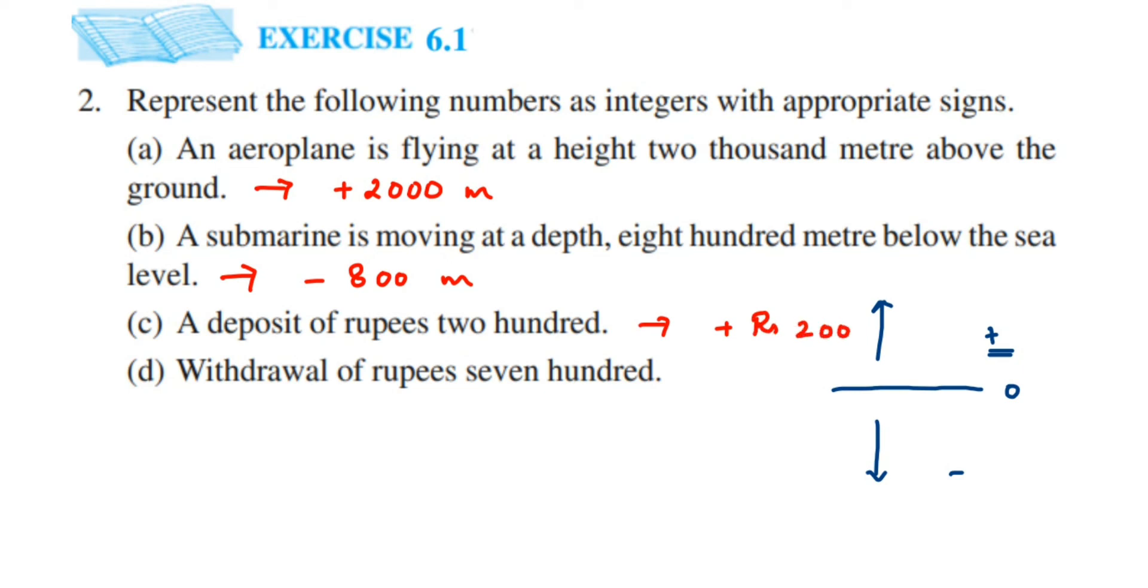The fourth one is opposite of the previous question. It's withdrawal of rupees 700. Since someone is taking amount from the account, we are reducing the amount, so we are subtracting from the account balance. Withdrawal means the sign will be negative, so minus. The rupees amount is 700, so -700 rupees is the answer.